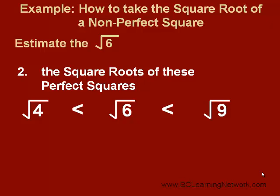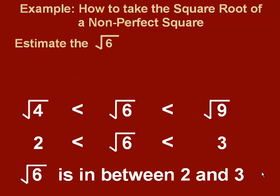All we need to do is take the square roots of these perfect squares and we'll have our estimate. The square root of 4 is 2 and the square root of 9 is 3. So, I now know that root 6 is greater than 2 and less than 3. For our estimate, root 6 is in between 2 and 3.